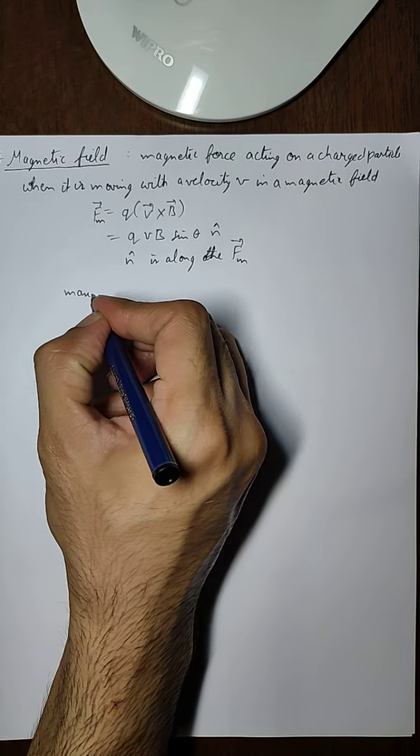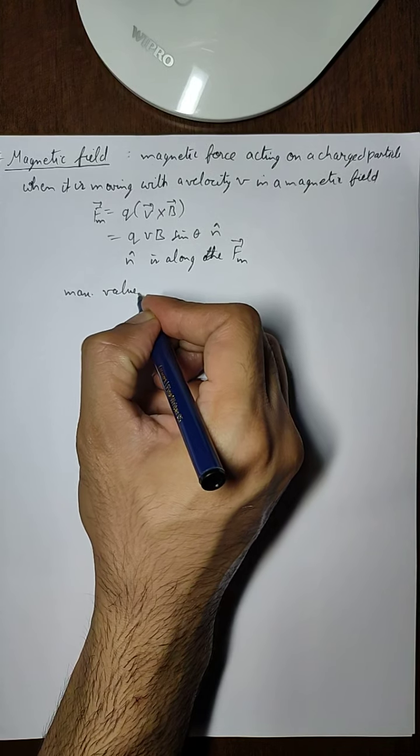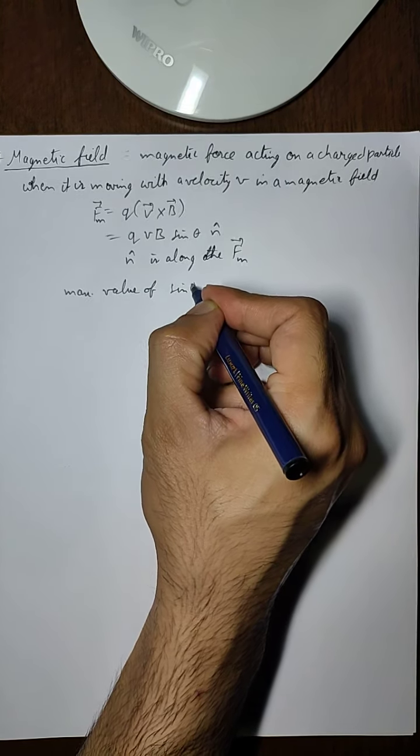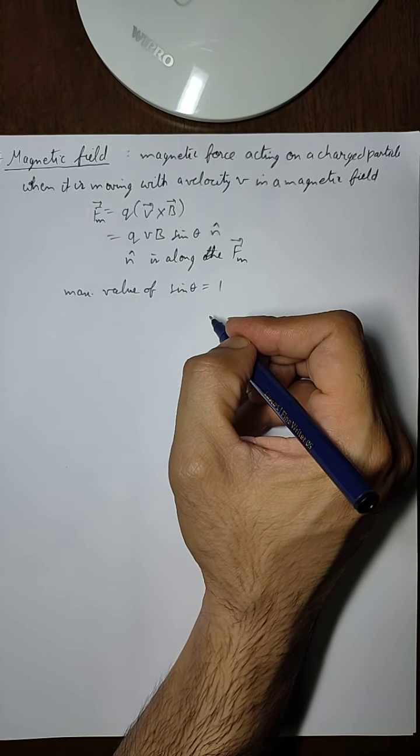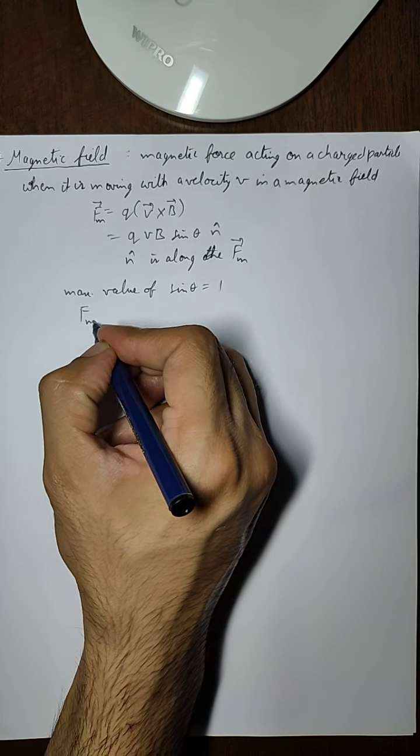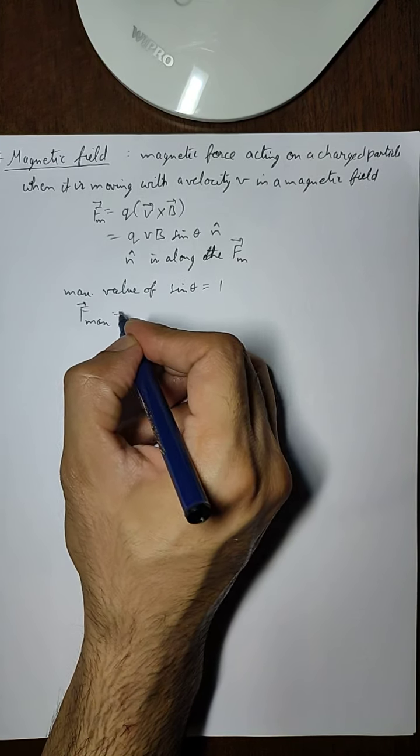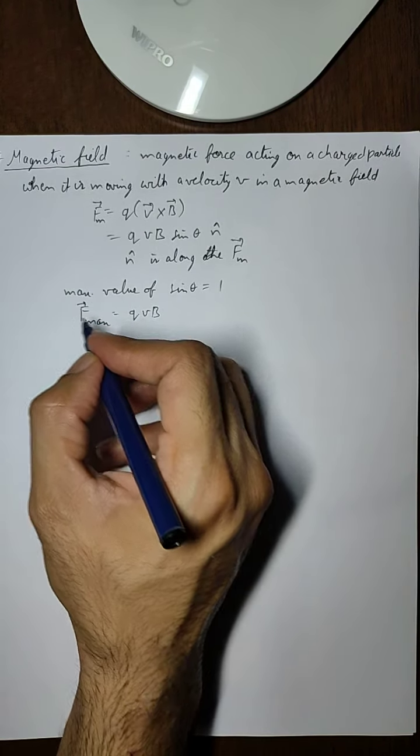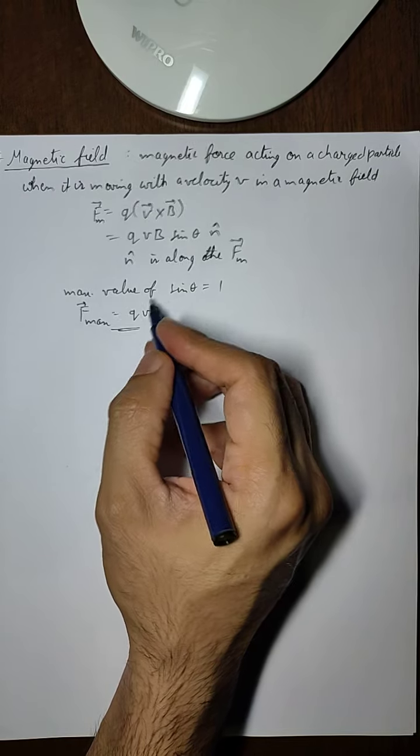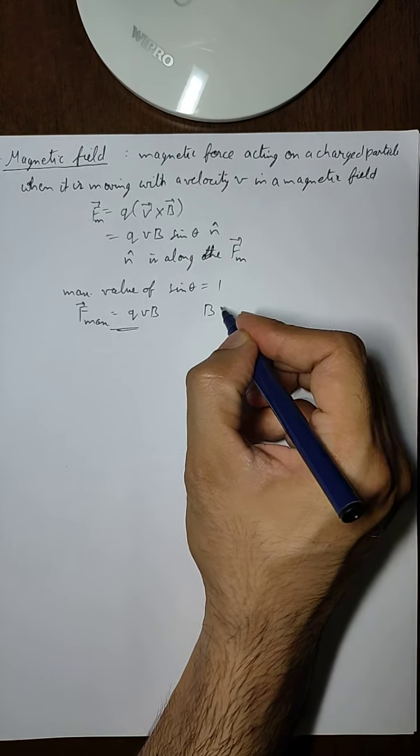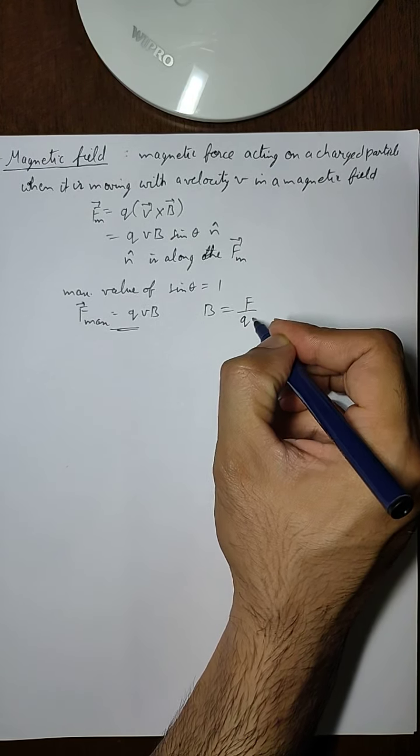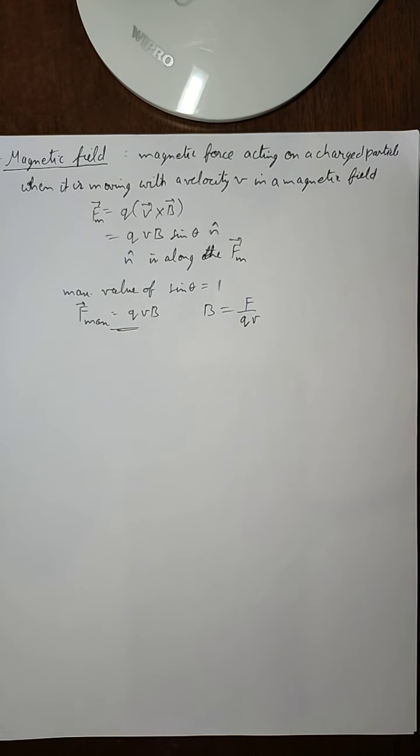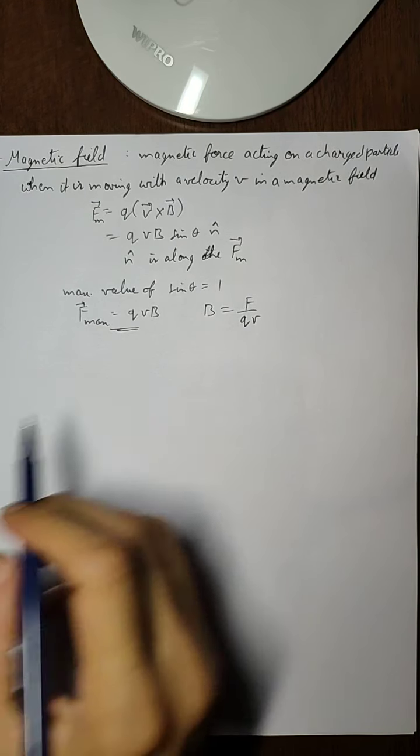The maximum value of sine of any angle can be 1, so that means the maximum value of this force will be equal to Q V B. So this will be the maximum force. This formula can be used directly, and from this we also get another formula which is sometimes used in numericals.